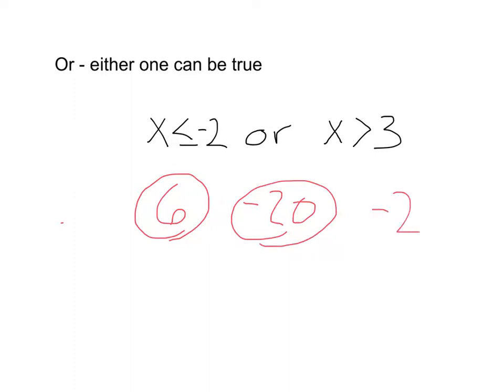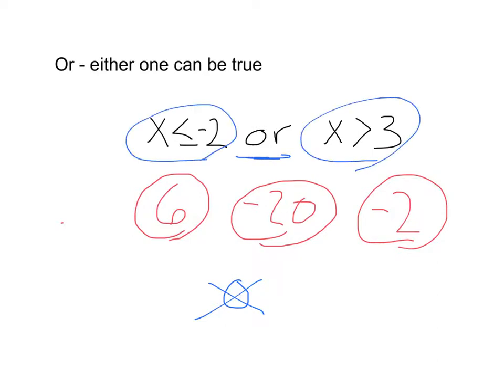What about negative 2? Negative 2 is less than or equal to negative 2. That's true. So, even though it's not greater than 3, still, this is true. Okay, what if we said 0? What about 0? Is 0 less than or equal to negative 2? No. Is 0 greater than 3? No. So, 0 is not included in this solution. So, whenever you have an or, either this one has to be true, or this one has to be true.